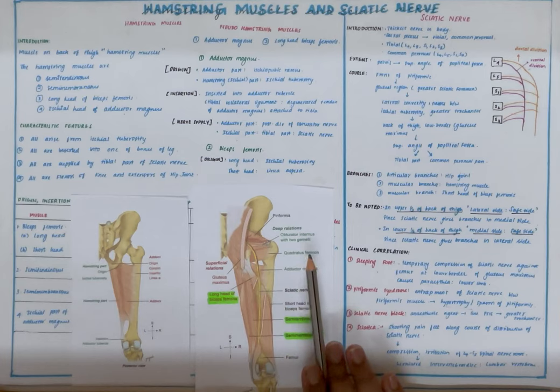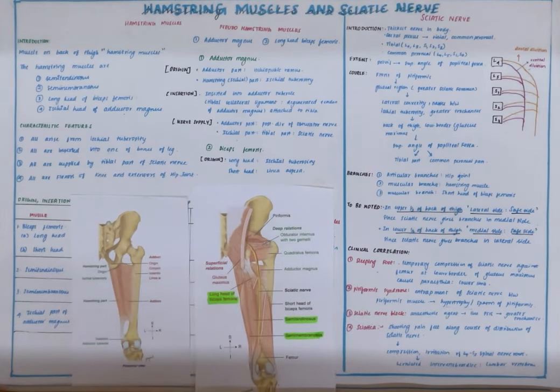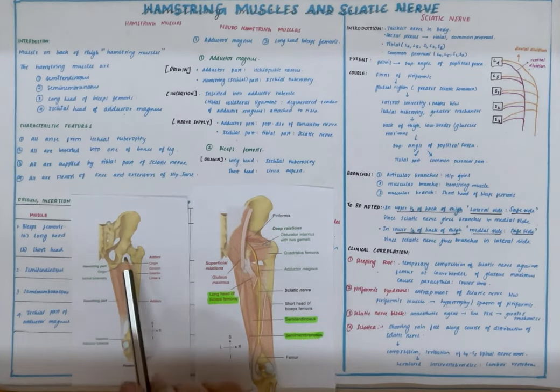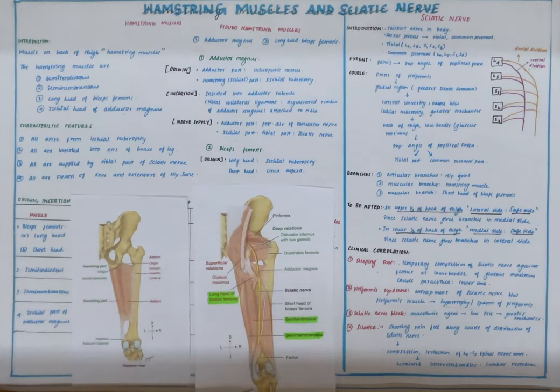All four of these muscles are supplied by the tibial part of the sciatic nerve, and their actions are to flex the knee joint and extend the hip joint. Thank you.